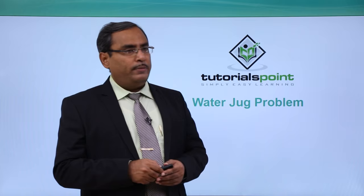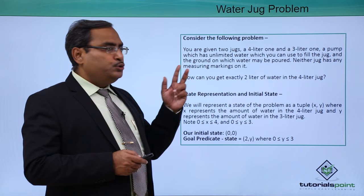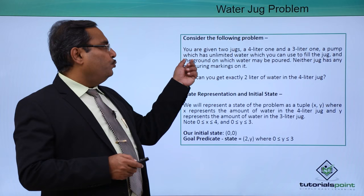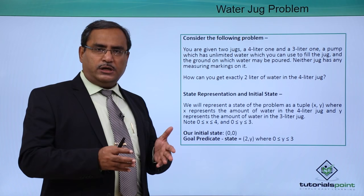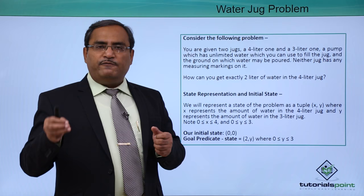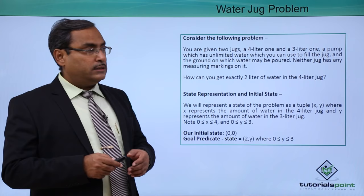The Water Jug Problem is a very famous, common, and classical problem. You are given two jugs — a 4-litre one and a 3-litre one — and a pump with unlimited water supply which you can use to fill the jugs. Water can also be poured on the ground. We have one pump with infinite water supply to fill both jugs.